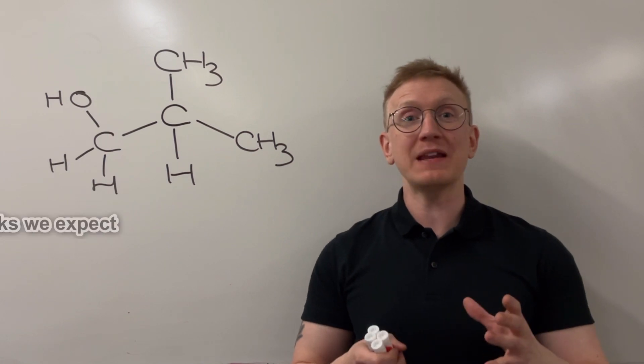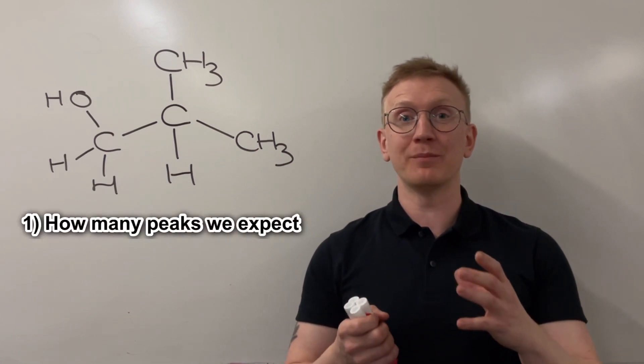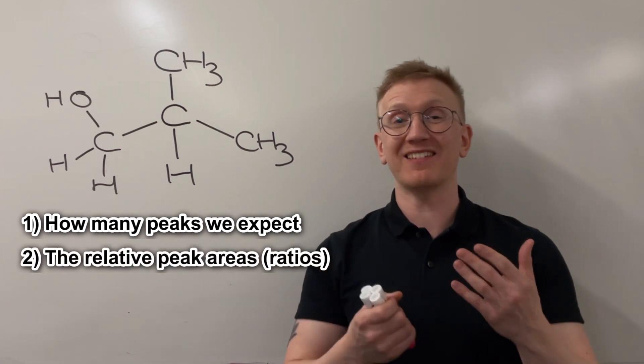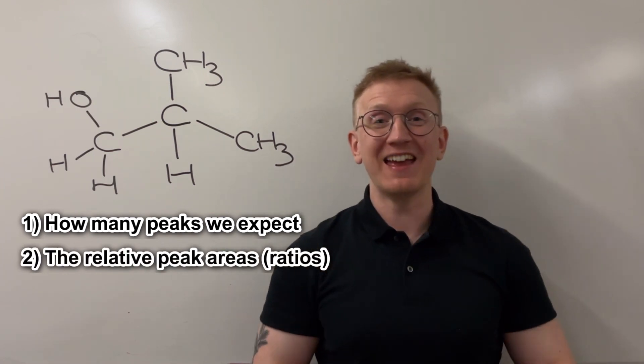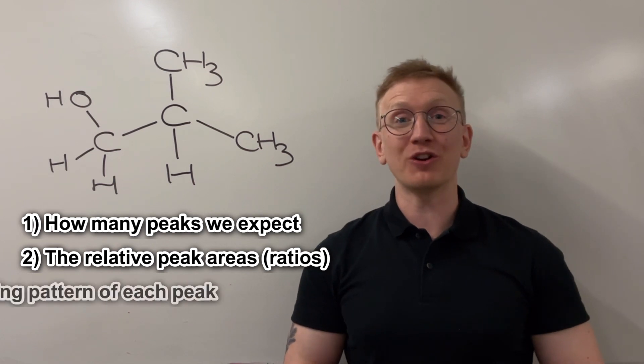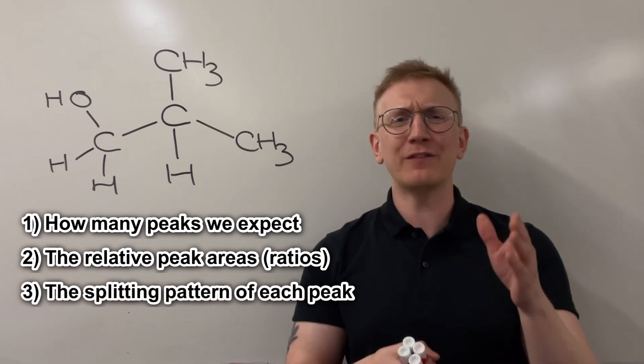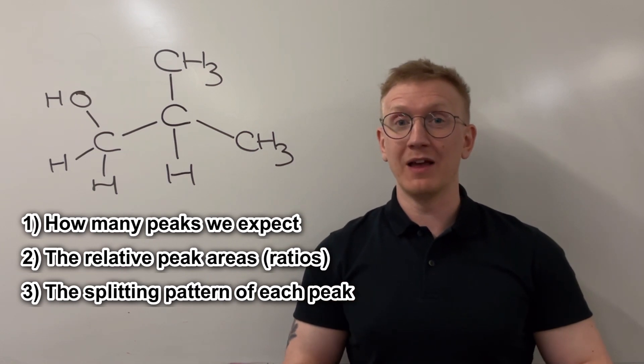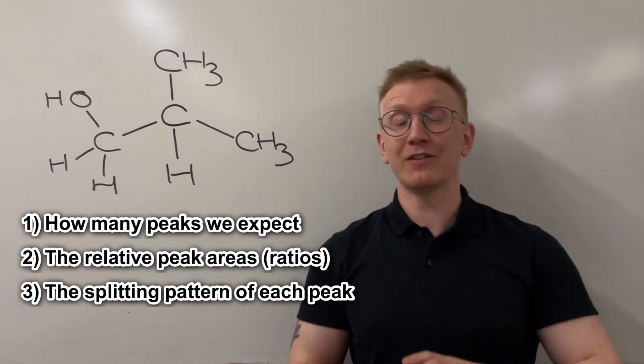I'll be looking at how many peaks I expect to have based on the number of non-equivalent hydrogen environments. I'll also be looking at what the ratio of those peaks is to each other, and then finally, for each environment, I'll be having a look at the splitting pattern. So how many sub-peaks do I expect my individual peaks to be split into based on their spin-spin coupling to other environments.